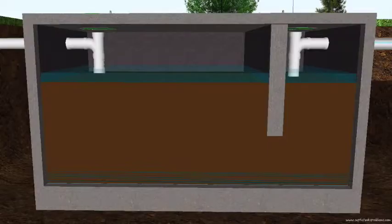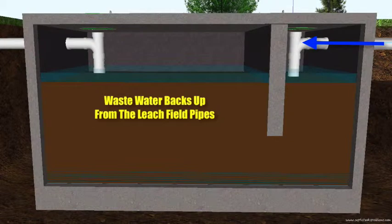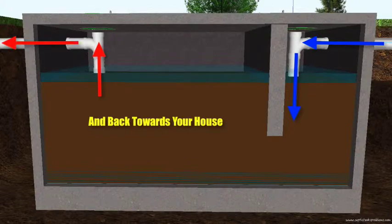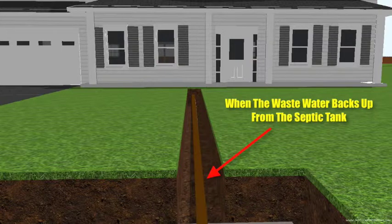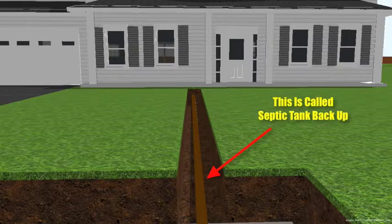So what is septic system failure? Once the drain field pipes become clogged with sludge, the wastewater backs up from the drain field down the pipes into the septic tank, and from the septic tank it backs up toward your house — into the kitchen, the yard, the bathtub, or laundry. This is called septic system failure.